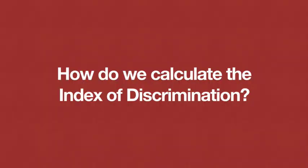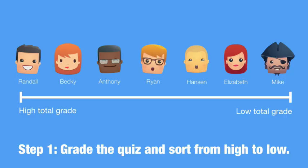How do we find the index of discrimination? It begins first by grading the total test score for each student. Once that's complete, we'll sort the students from high total grade to low total grade. Here you see an illustration of my students ranked from high to low. Now, let's imagine there are more students in the class, but you get the idea.